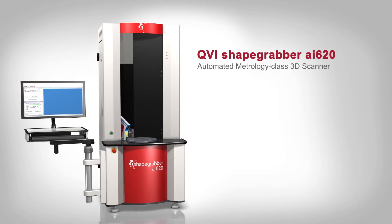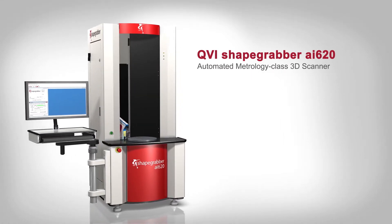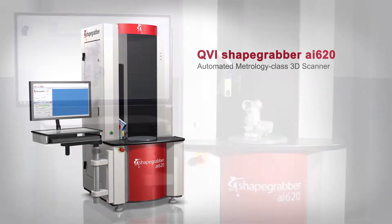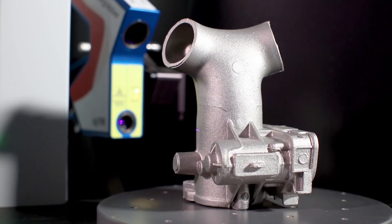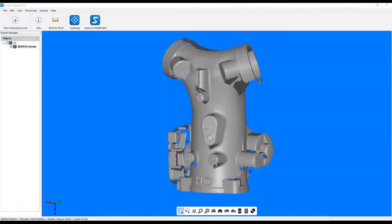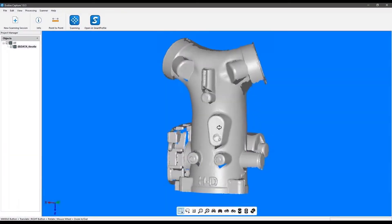QVI ShapeGrabber AI620 is an automated metrology class 3D scanner. The AI620 features a precision rotary table and high accuracy scan head designed to fully measure complex shaped parts quickly and easily.